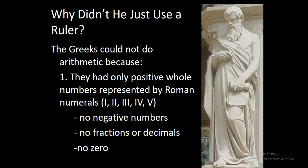So we could ask, why didn't this guy just use a ruler when he had to create triangles and shapes? Basically it was because the Greeks couldn't do the kind of math that we do because they didn't have any way of taking a whole number and breaking it into smaller parts.